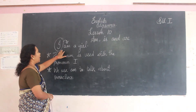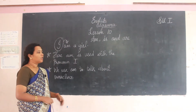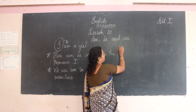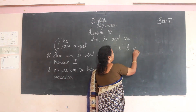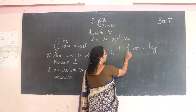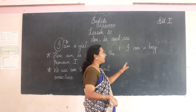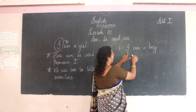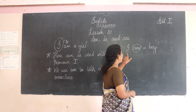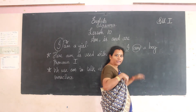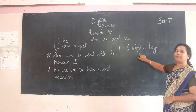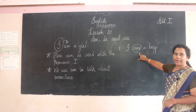So see here: 'I am a girl.' Now let us see some examples with 'I am'. See the first one: 'I am a boy.' So 'I' is the pronoun, and we are writing 'am' here. 'I am a boy.'